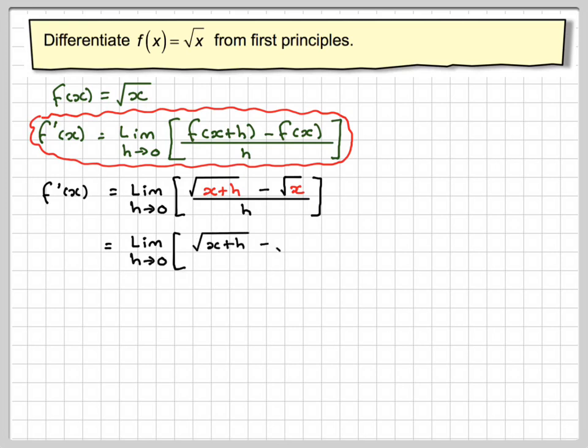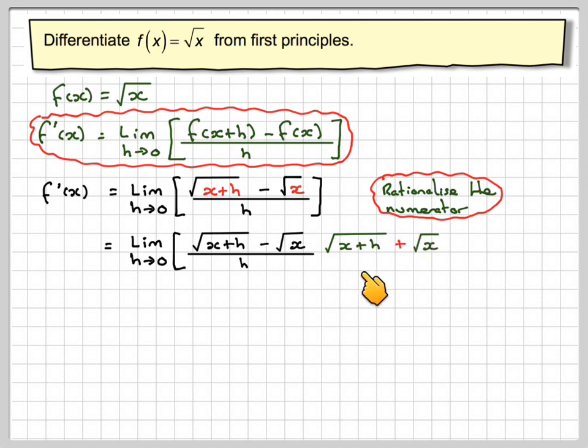Okay, so just writing that out again. Now then we're going to do something a bit strange. Normally we would rationalize the denominator, but this time we're going to actually rationalize the numerator. So if this is x plus h, a square root of x plus h minus the square root of x, then this becomes x plus h plus root of x over square root of x plus h plus square root of x.